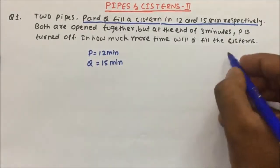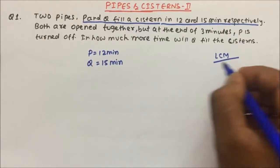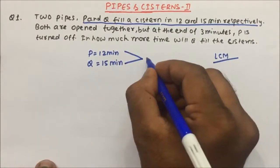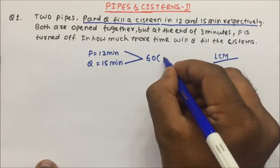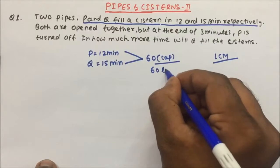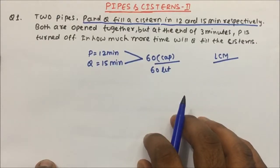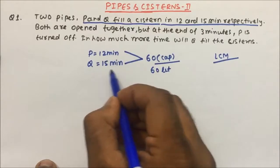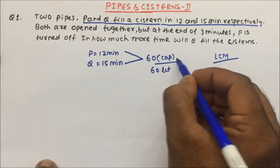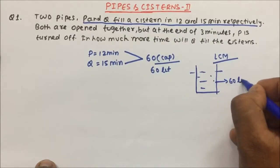We are going to solve this by the LCM technique, which will solve your question quickly within 30 seconds. In the LCM technique, we take the LCM of 12 and 15, which will be 60. This 60 becomes the capacity of the tank — you can say the tank is of 60 liters. P takes 12 minutes and Q takes 15 minutes to fill this 60-liter tank.